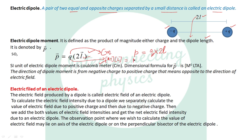The most important point: the direction of dipole moment is from negative charge to positive charge. This is how we indicate the direction of the dipole — from negative charge to positive charge — and it is just opposite to the direction of the electric field, because the electric field has direction from positive charge to negative charge.